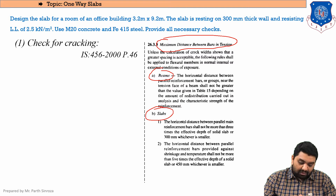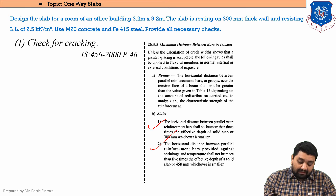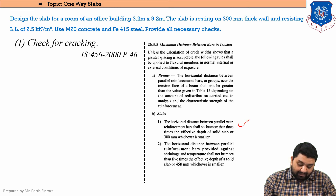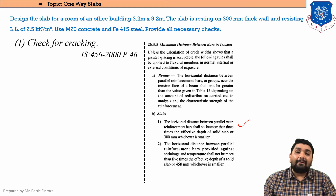In clause 26.3.3, point (a) is for beams and point (b) is for slabs. As we are covering slabs, we will see point (b). There are two sub-points: the first is horizontal distance between parallel main reinforcements, and the second is horizontal distance between parallel reinforcement bars provided against shrinkage and temperature — which is our distribution steel.